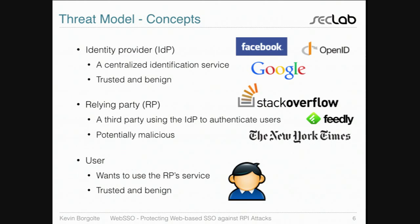Let me step back on the threat model. There are three entities involved in any SSO protocol. There's the identity provider — Facebook, Google, OpenID — which is a centralized identification service; in our case we assume it's trusted and benign. There's the relying party, a website wanting to use the IDP to authenticate users, which in our case can be malicious — it can fake packages and try to authenticate users who didn't intend to authenticate. And there's the user who wants to use the RP's services, and is trusted and benign.